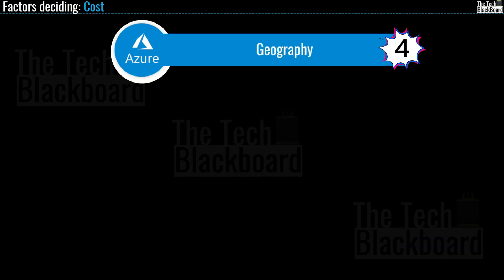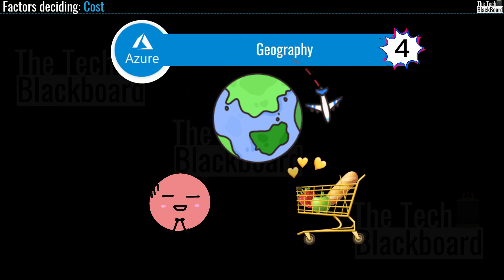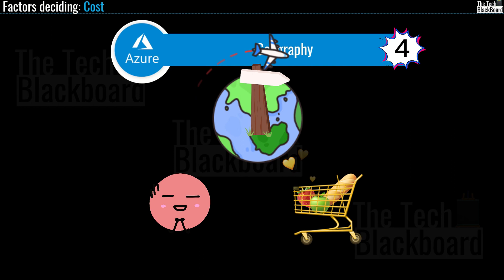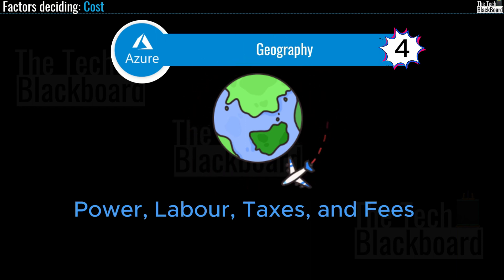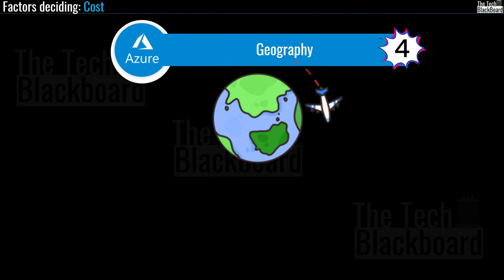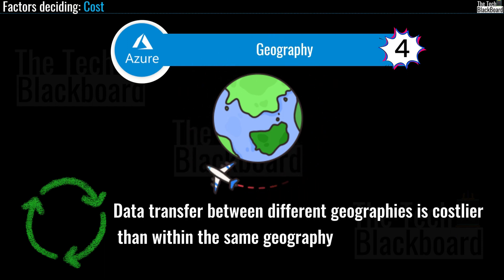Now let's understand how geography affects your cost. Azure's infrastructure is distributed worldwide, allowing you to deploy solutions closer to your customers. For global applications, you can also deploy at a centralized location. But this distributed infrastructure also impacts cost — power, labor, taxes, and fees all differ across locations, resulting in differences in deployment cost based on the chosen region. Additionally, geography influences network traffic costs: transferring data within Europe is more cost-effective compared to moving data between Europe and Asia or South America. Data transfer between different geographies is costlier than within the same geography.